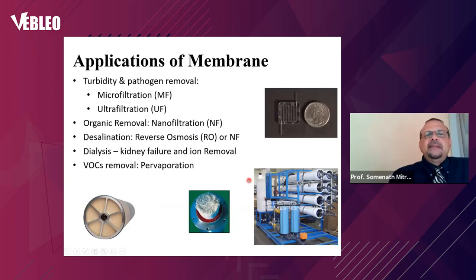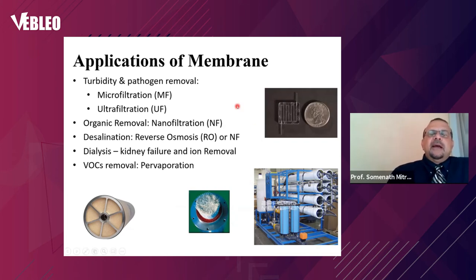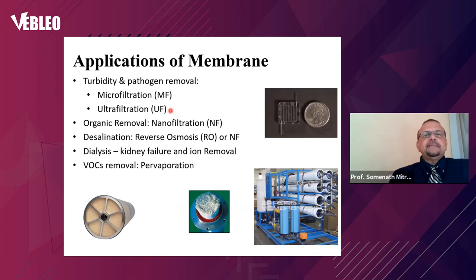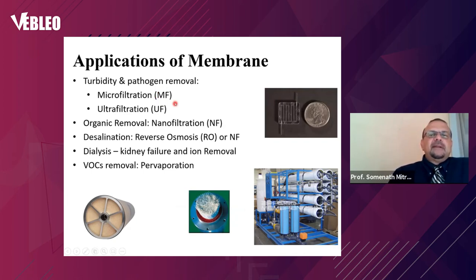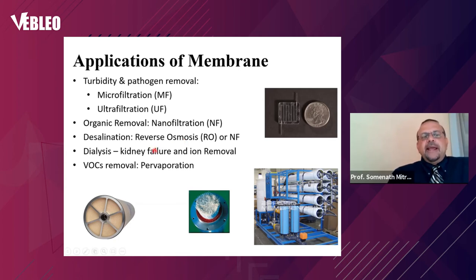So now we have multiple materials: functionalized carbon nanotubes with specific surface chemistry, graphene oxide reduced in a controlled fashion to precise chemical properties, and carbon nanotube–graphene oxide hybrids with unique properties. The next question is how do we make membranes from these? Membranes are used extensively in water treatment — nanofiltration with nanometer-scale pores, microfiltration, desalination, reverse osmosis, and even kidney dialysis in medicine.